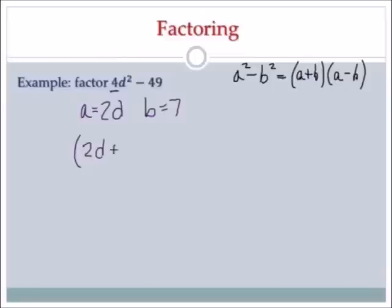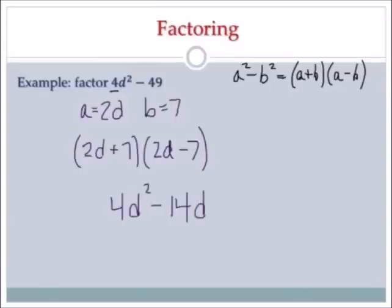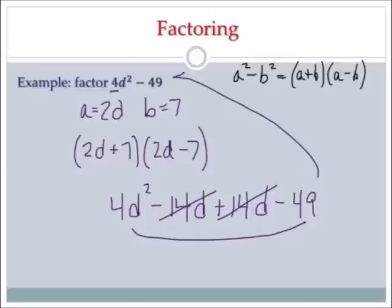Now I apply the formula: (a plus b)(a minus b), so (2d plus 7)(2d minus 7). I need to distribute twice to check. 2d times 2d is 4d squared. 2d times negative 7 is negative 14d. Then I distribute the 7: 7 times 2d is positive 14d, and 7 times negative 7 is negative 49. The negative 14d and positive 14d go to 0, leaving 4d squared minus 49, which is what I started with. So that is in fact my final answer.